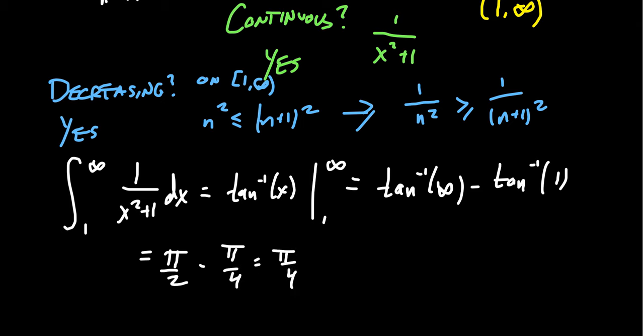This tells us that the integral, this improper integral actually adds up to pi fourths. It's less than infinity. This is evidence that the integral is convergent. And we're talking about the improper integral is convergent.